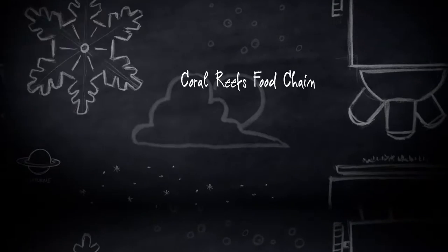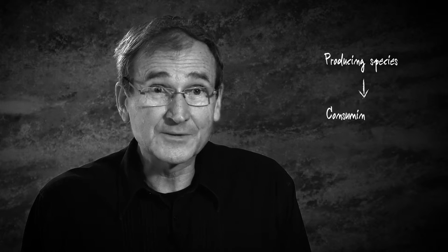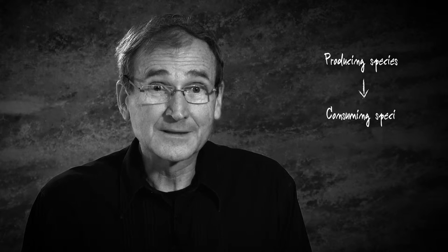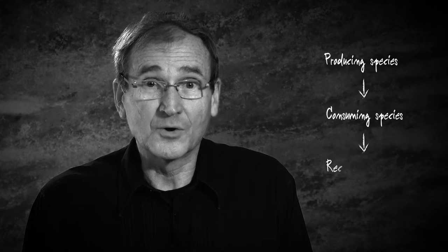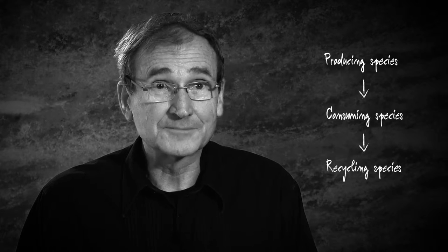Major ecosystems, which include a broad variety of species, such as tropical forests or coral reefs, depend on balance. They depend on an equilibrium between species which produce food for consumers, which, as they die, will feed recyclers. An equilibrium must be reached between these three elements.